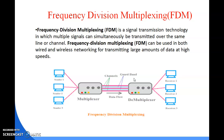Each frequency band is used to carry a separate signal, allowing a transmission medium such as a cable or optical fiber to be shared by multiple independent signals. FDM can also carry separate serial bits or segments of a higher-rate signal in parallel. This technique applies to both wired and wireless media.